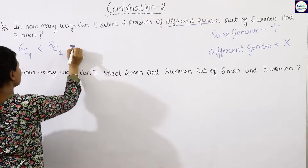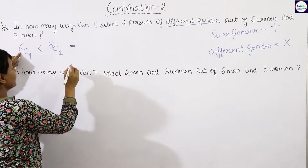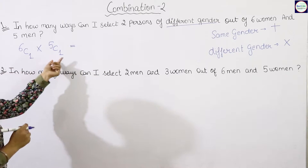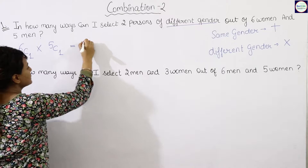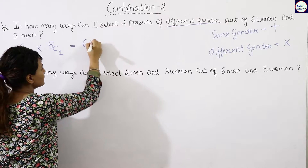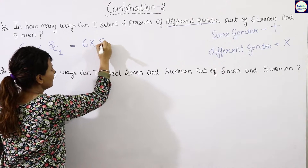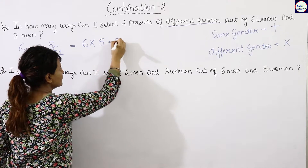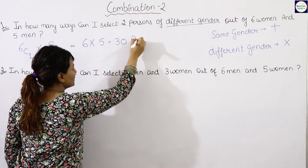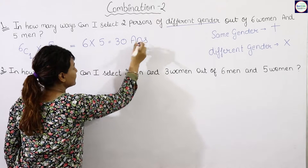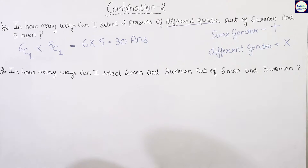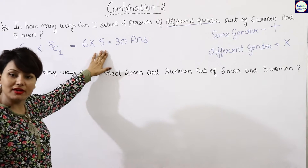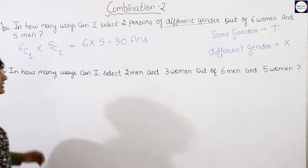How will we write this? Since we are selecting one each, it simplifies to six into five, which gives us thirty. So there are thirty ways to select two persons of different gender out of six women and five men.